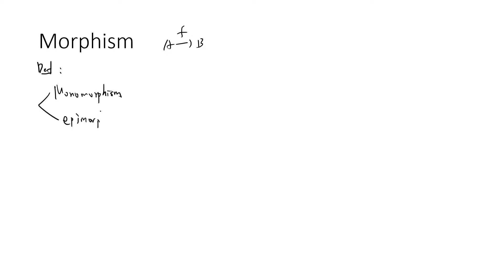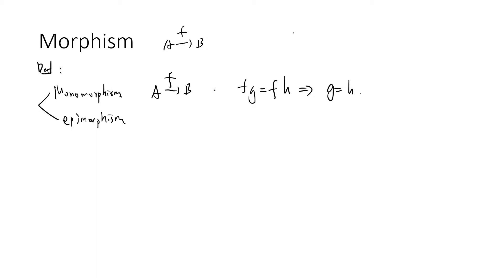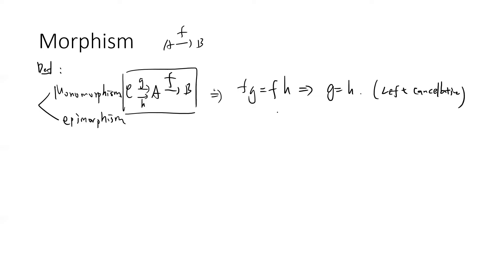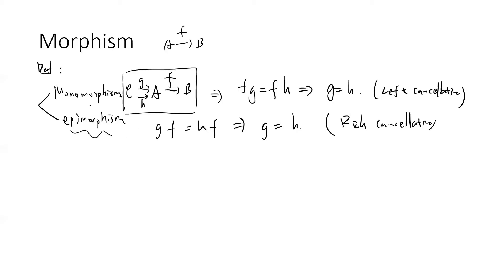A morphism f from A to B is called a monomorphism if fg equals fh implies g equals h — for every g and h from some other object. This is also called left cancellative. Conversely, the epimorphism means that gf equals hf implies g equals h. This is called right cancellative — you cancel from the right. The epimorphism and monomorphism relate to surjectivity and injectivity.